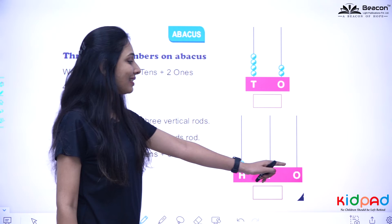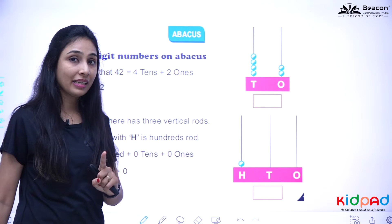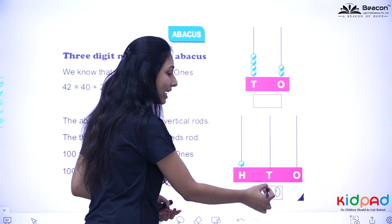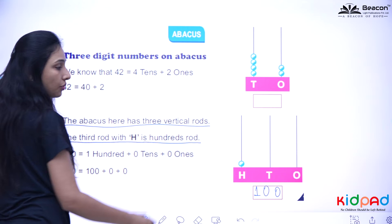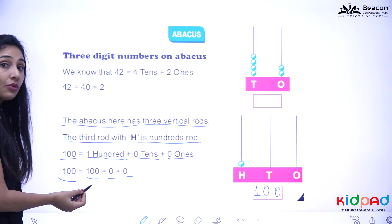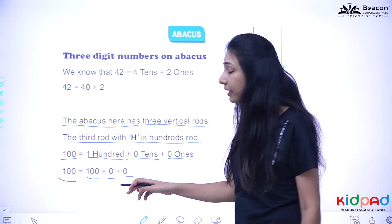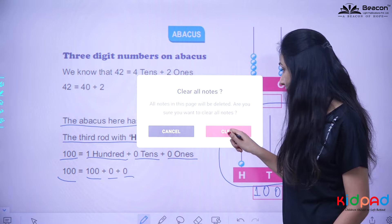If your abacus is looking like this, in which the first road has no bead, the second also has no bead, but the third has one bead. How will you represent this? First, ones place has zero, tens place has zero, and hundreds place has one bead. So the abacus here has three vertical roads, the third road is the hundreds road. You can write it 100 equals to 100 plus 0 tens plus 0 ones. 100 plus 0 plus 0. Can you write like this? So 100 plus 0 plus 0 equals to what? Equals to 100. So yes, we can write it like that. This is your 100 and this is how you will represent it on your abacus.